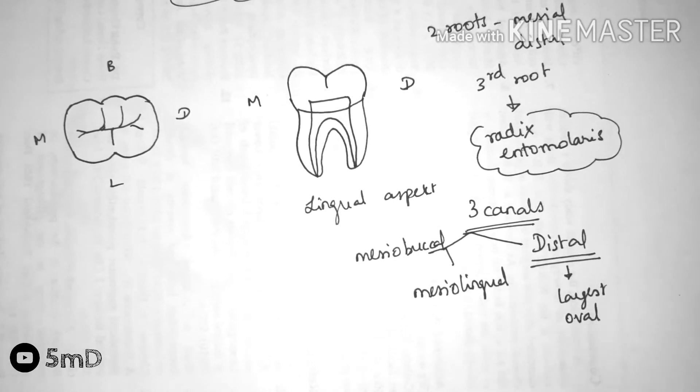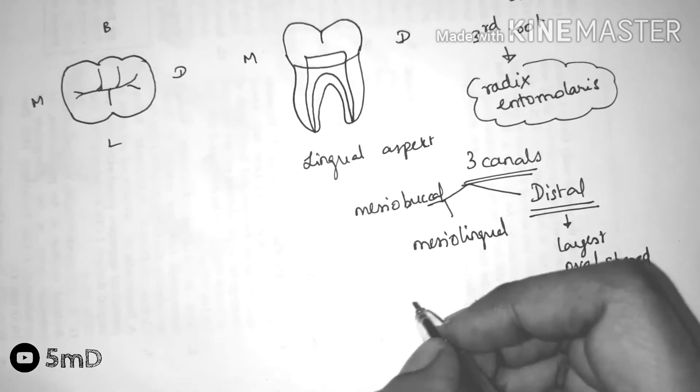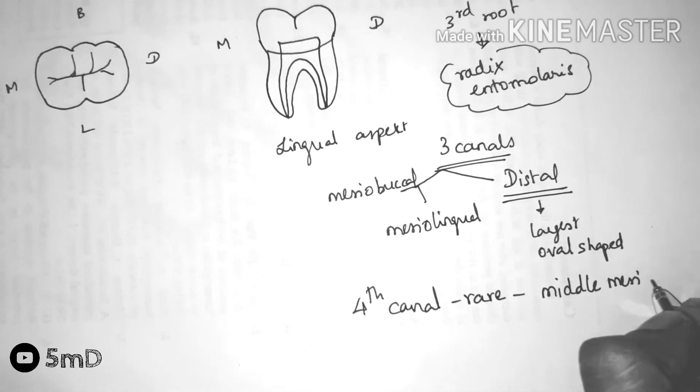The distal canal can have 2 or more orifices. It is the largest canal and oval shaped.